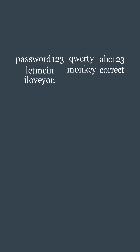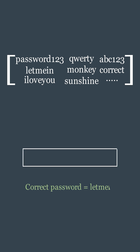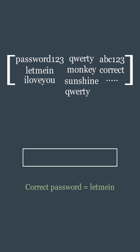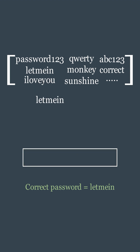In a dictionary attack, the attacker uses a precompiled list of the most commonly and frequently used passwords. Imagine a list containing passwords like password123, sunshine, let me in, and abcde. The attacker systematically tries each password from the list, hoping one of them will be the correct one. Unlike a brute force attack, which tries every possible combination of characters, a dictionary attack is faster and more efficient because it targets likely passwords that people often choose.